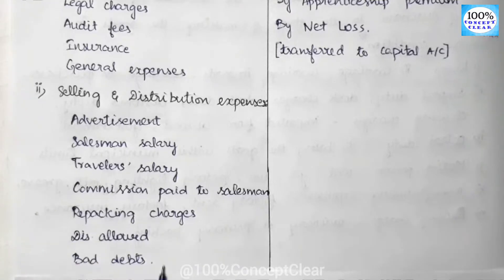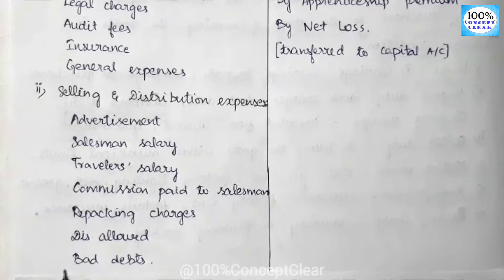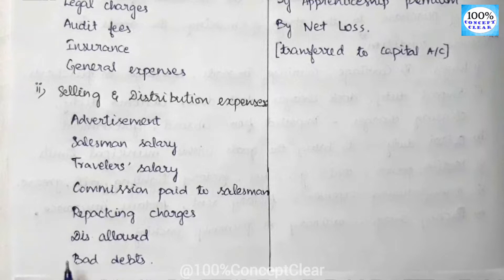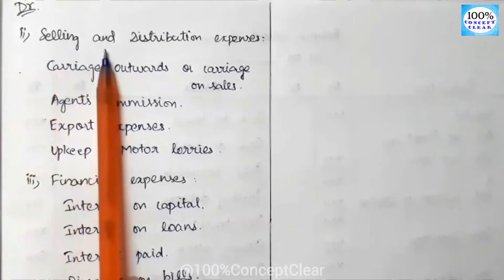Next we have bad debts. We sell the product to the customer on a credit basis. In those cases, our customers may not return the cash within a period — we may not recover the cash. That unrecoverable amount is the bad debts amount. Bad debts are also listed under selling and distribution.